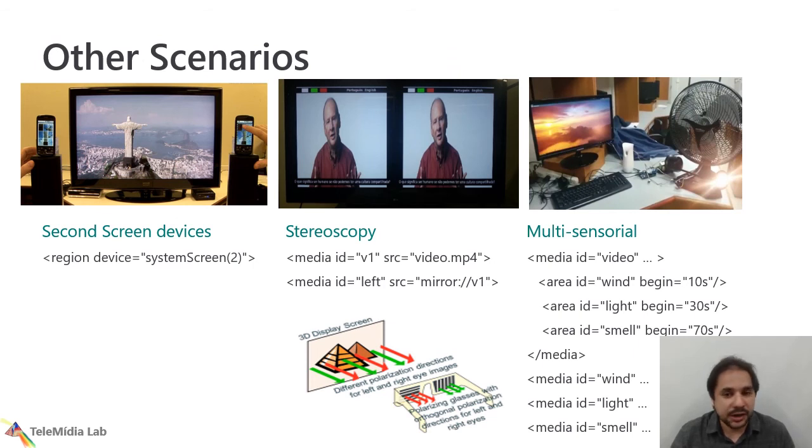Other important scenarios that are not discussed here, but are important to mention, is regarding second screen, where you can use a remote region that presents some content, some media content, like some HTML, or Java, or another content can be delivered to another device to be presented, and remain the same synchronism in the whole presentation. Also, we can use stereoscopic content by using the mirror source, that some kind of content is replicated, and we can create the left eye to be presented in a stereoscopic-enabled TV. And we also can use multisensorial effects when you define different types of media that will handle effects to be executed in the living room. For instance, here we have an example, in the 10 seconds we will have a wind, at the 13 seconds we will have a light, and in 7 seconds we will have a smell.